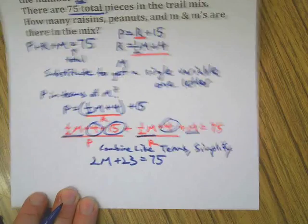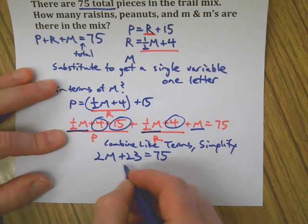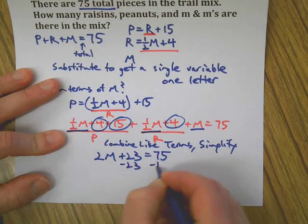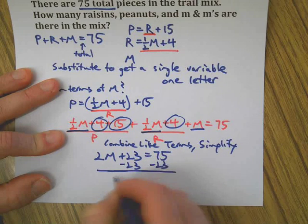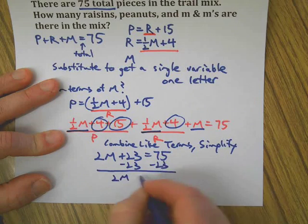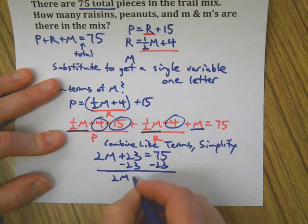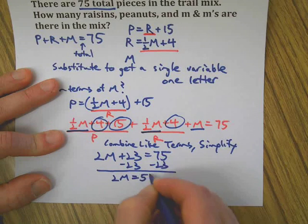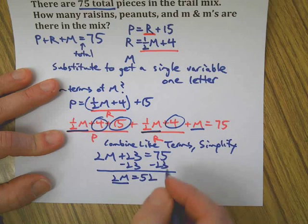So I've got half of an M, I've got another half of an M, and I've got an M—that makes a total of 2M. I'm going to put all my numbers together: there's 4 plus 15 makes 19, plus 4 makes 23. And now it just looks like a nice simple single variable equation that we can solve: 2M + 23 = 75.